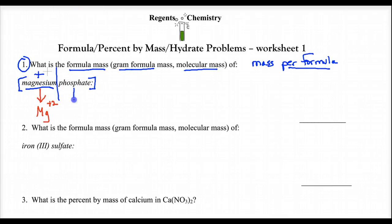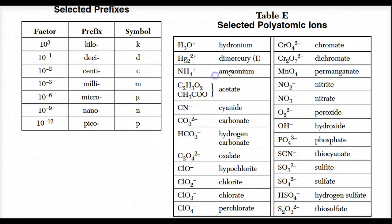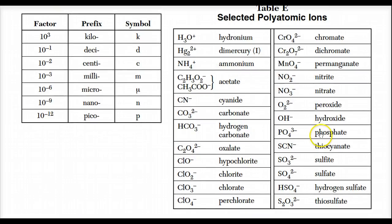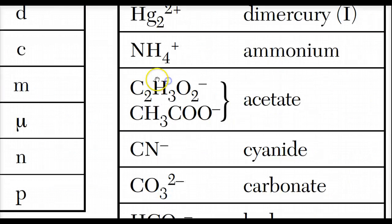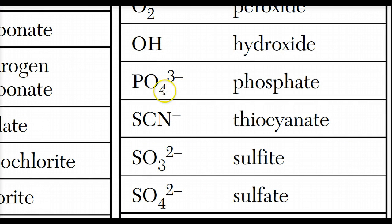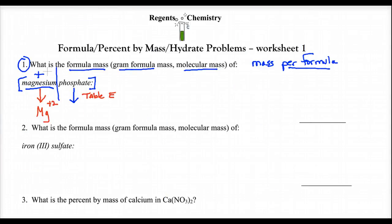Then we have phosphate. If it ended in phosphide, that would tell me it's binary — just phosphorus. But it ends in -ate, which is the name of a polyatomic ion. We go to Table E — the 'what the heck is that' table — and phosphate is PO4 negative three: one phosphorus, four oxygens, and the whole cluster has a charge of negative three.